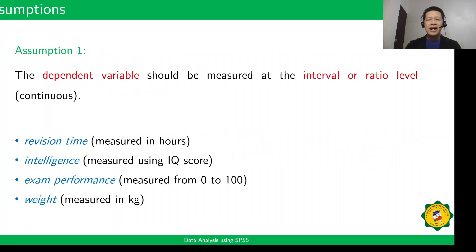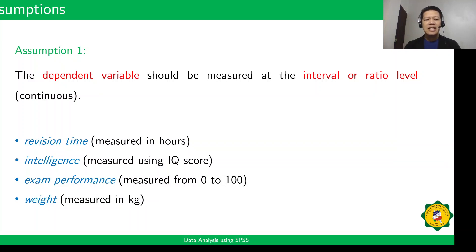We need to satisfy the following assumptions before we can use ANOVA. First, the dependent variable should be measured at the interval or ratio level, like revision time, intelligence, exam performance, and weight.